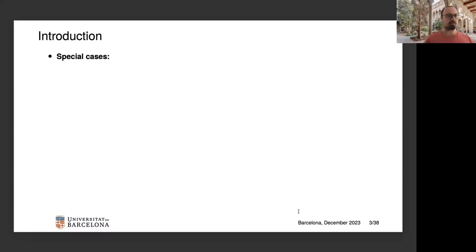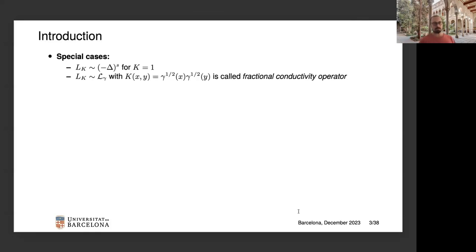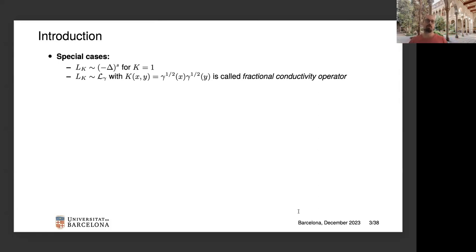Before proceeding, let me give some special examples of elliptic integral-differential operators. The first example is the fractional Laplacian of order s, obtained when we formally take K equal to 1 up to a constant. Another example, which I studied heavily in my PhD thesis, is the fractional conductivity operator. This is obtained up to a constant if we take K(x,y) to be equal to √γ(x) times √γ(y), where γ is also a uniformly elliptic function.